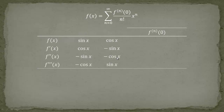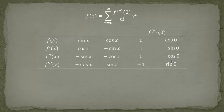Now let's plug in 0. We have sine of 0 and cosine of 0 with plus and minus signs. The only thing we need to know is that sine of 0 is 0 and cosine of 0 is equal to 1. Doing the same for cosine: the values are only sine and cosine of 0. Sine of 0 gives 0, cosine of 0 gives 1, minus sine of 0 gives 0, and minus cosine of 0 gives minus 1. For the cosine derivatives at 0 we get 1, 0, minus 1, 0.